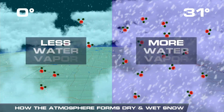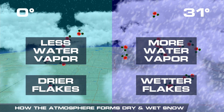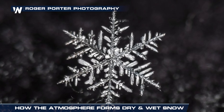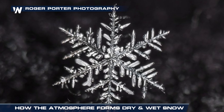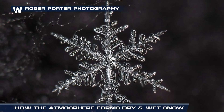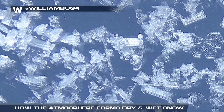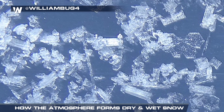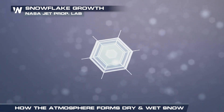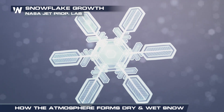Generally, the more water vapor that's available, the wetter and fatter the flakes become. Conditions with an abundance of water vapor produce the classic large, penny-sized snowflakes, whereas drier conditions produce smaller plates and column-shaped flakes. This entire process controls how much liquid water is contained in each inch of snow.